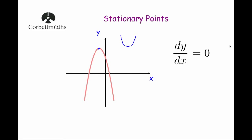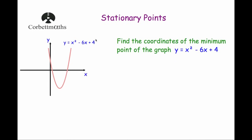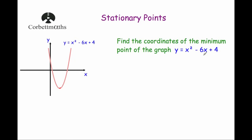Let's have a look at our first example. Find the coordinates of the minimum point of the graph y equals x squared minus 6x plus 4. We could have done this by completing the square, but we're going to use differentiation because it's a fantastic approach to finding the coordinates of these points really easily. So we've got y equals x squared minus 6x plus 4, and we're going to differentiate to get dy/dx.